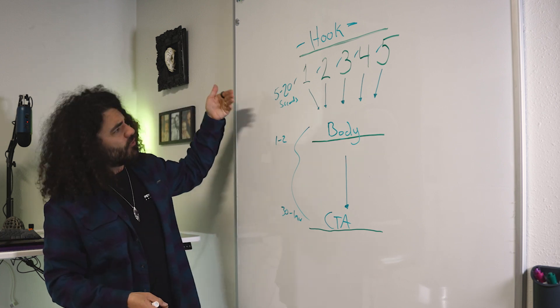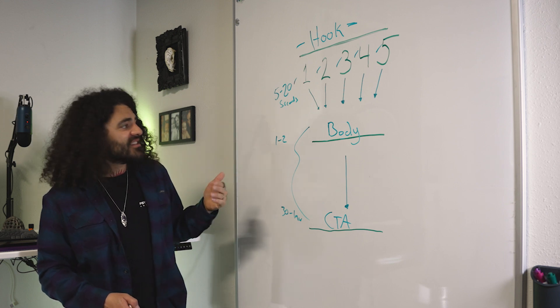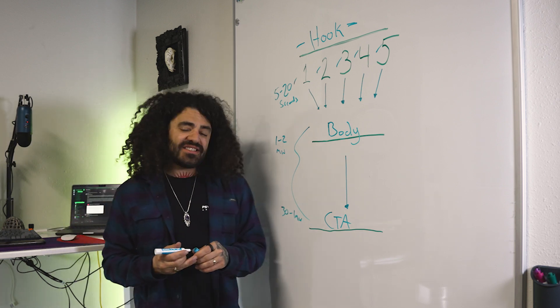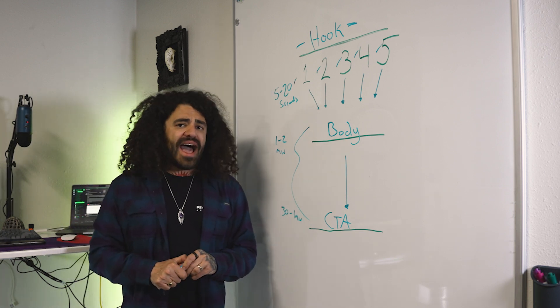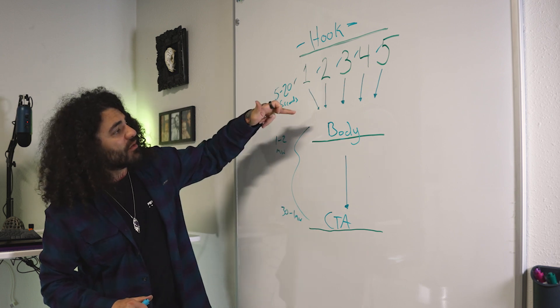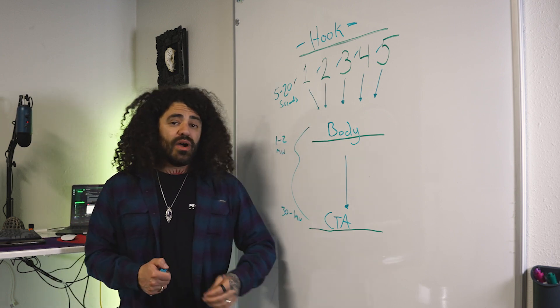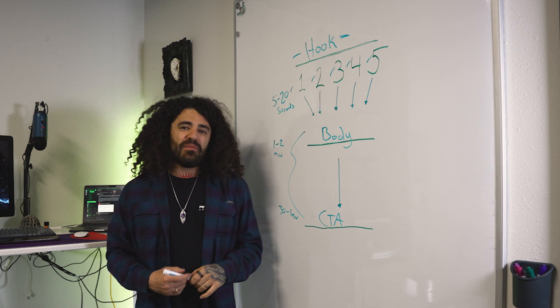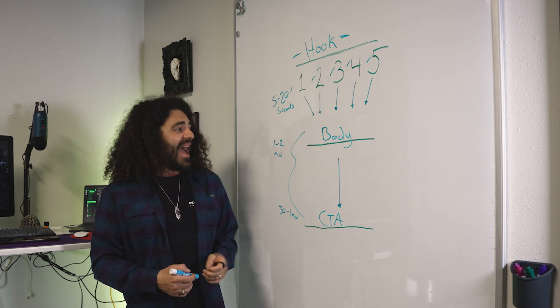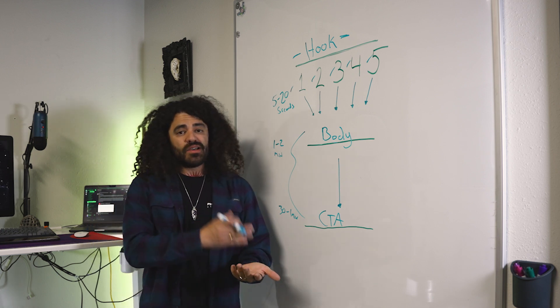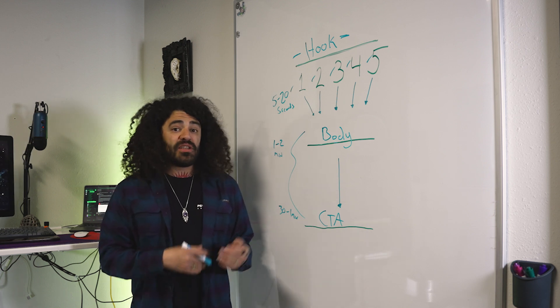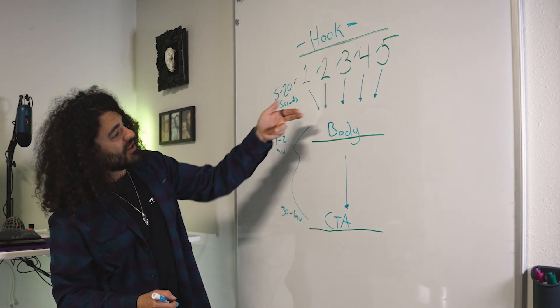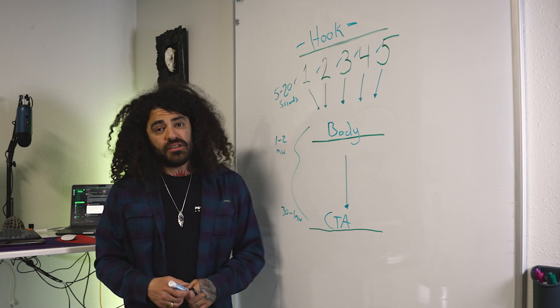I'd say this is a general format: your first five to 20 seconds, maybe even 30 seconds is your hook. One to two minutes is the body, and then 30 seconds to a minute of call to action. Sometimes I'll even throw a call to action right after the hook - seems to work really well. If you're saying I want to show you how so-and-so was able to do this, or even get to the education part, you can say I'm going to show you how so-and-so was able to get this result in this amount of time on a free live training. All you have to do is click the link on the video to learn more. You can throw that call to action up here, which is usually what I tend to do as well.